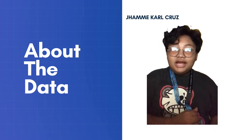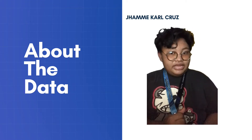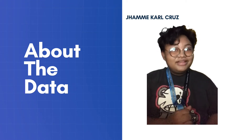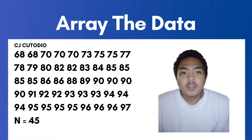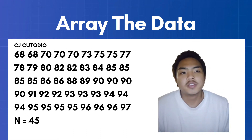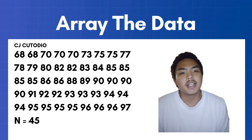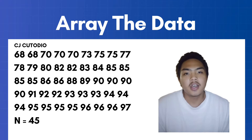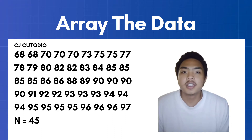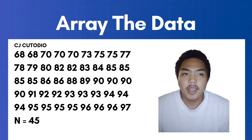After we gather our data, we must proceed to the arraying of our data. In arraying the data, we need to list the grades in lowest to highest form. As you can see, 68 is the lowest and 97 is the highest. If we count all of our listed data or grades, the total number of them is N, or the total number of data.